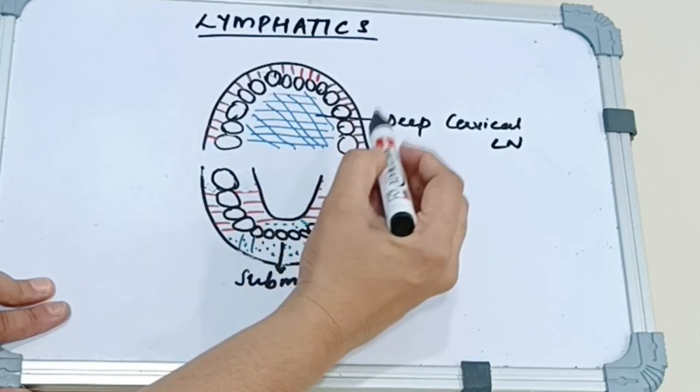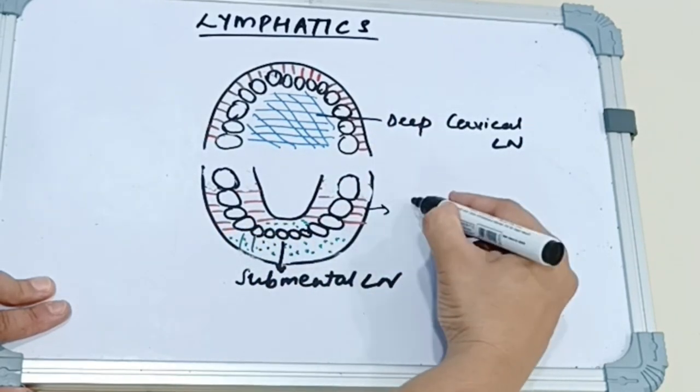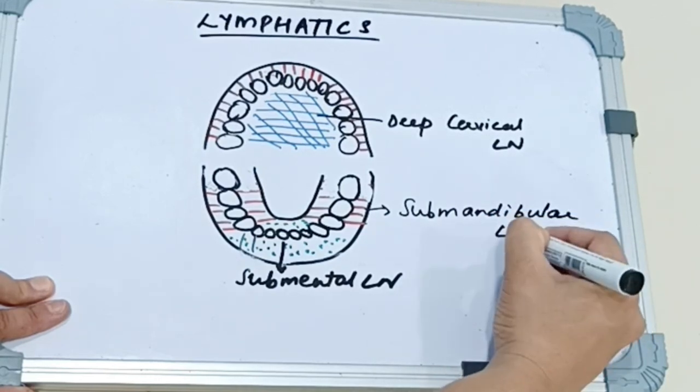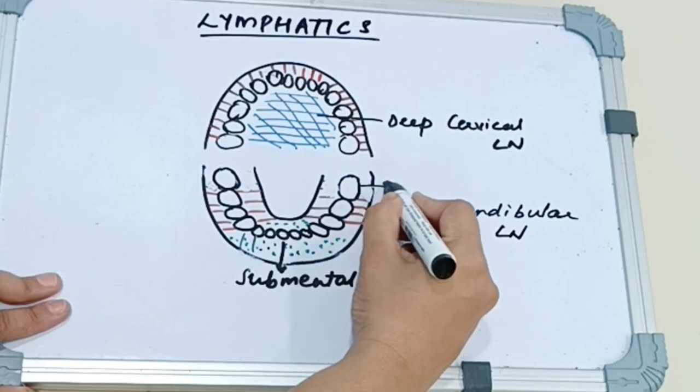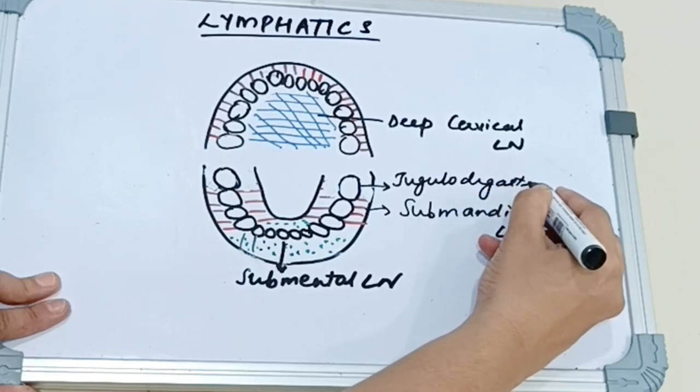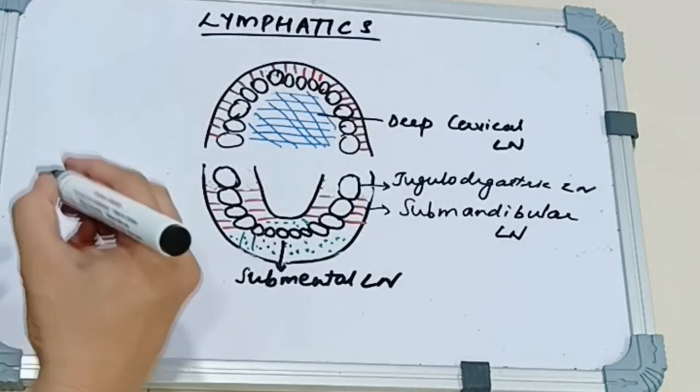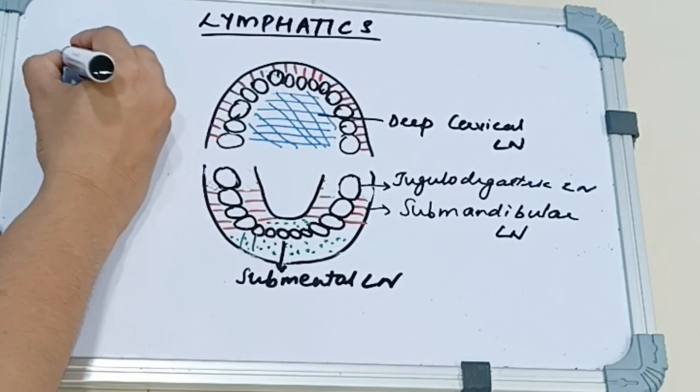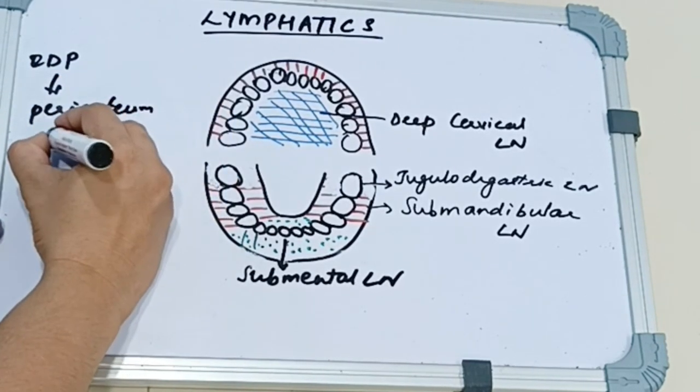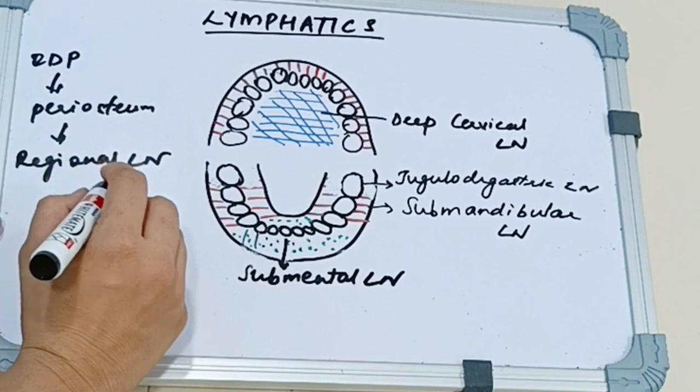Then the buccal of the maxilla and the buccal and the lingual of the mandibular premolar and molar region, it drains into submandibular lymph nodes. Whereas the mandibular third molar region drains into jugulodigastric lymph nodes. The lymphatic drainage progresses from the connective tissue papillae, interdental papilla, into the periosteum, into the regional lymph nodes, that is the submaxillary lymph nodes.